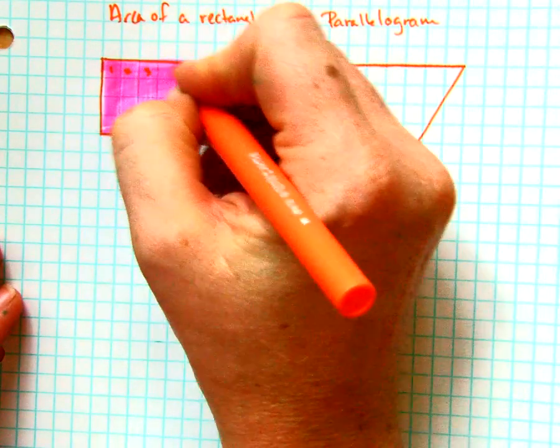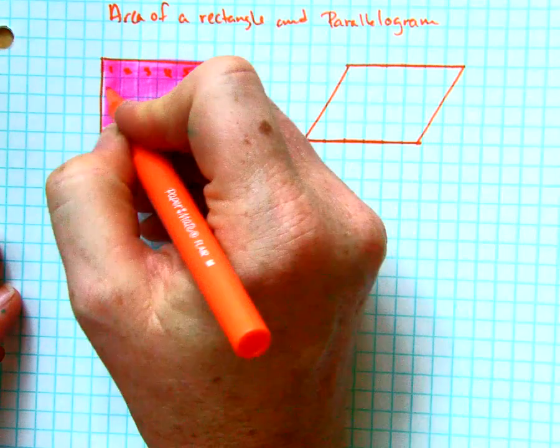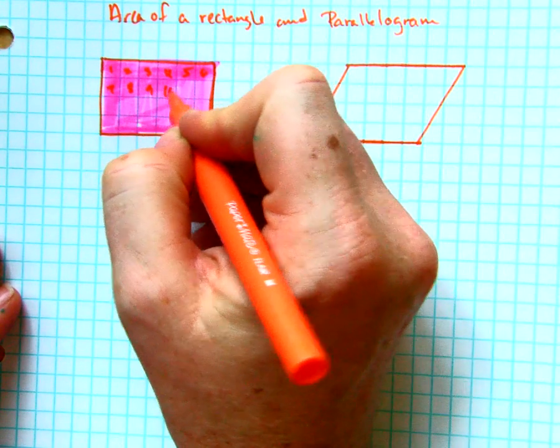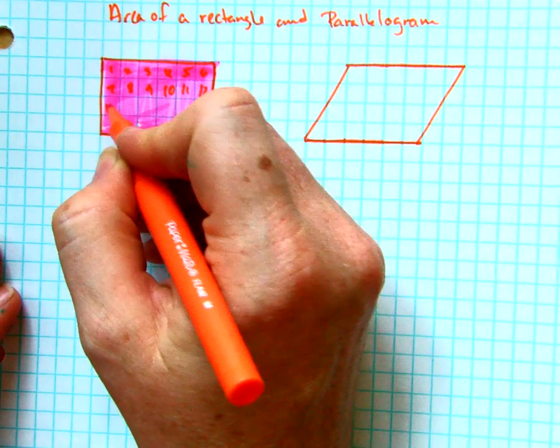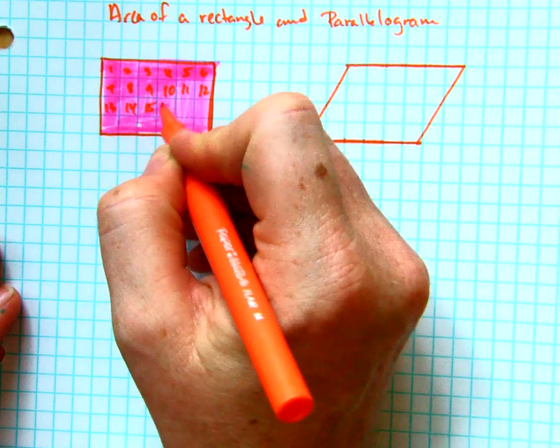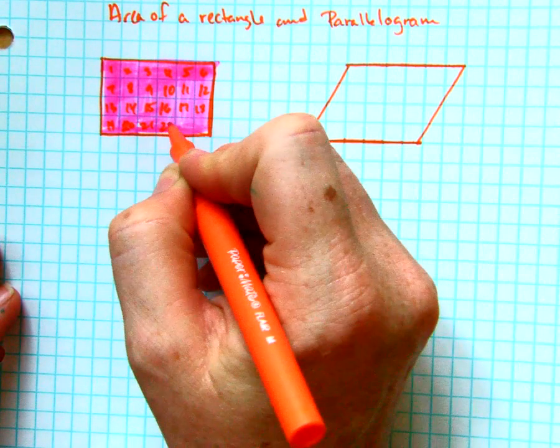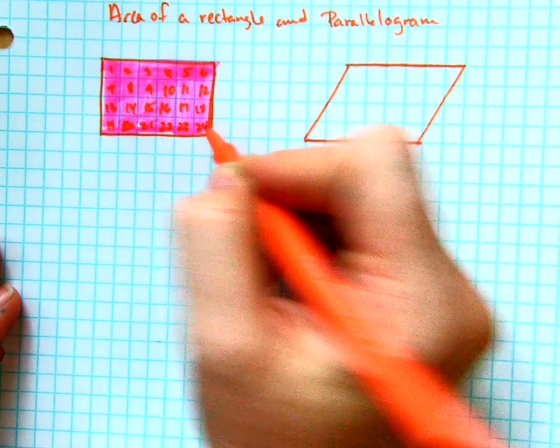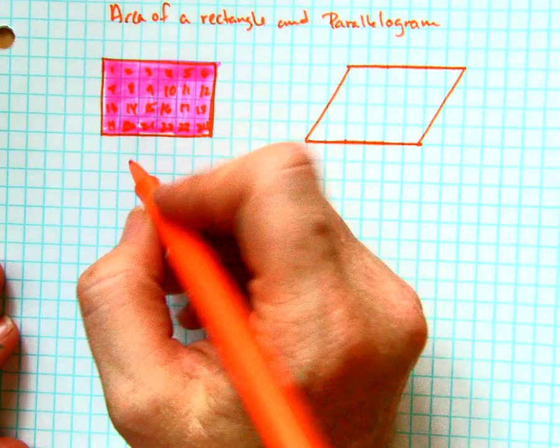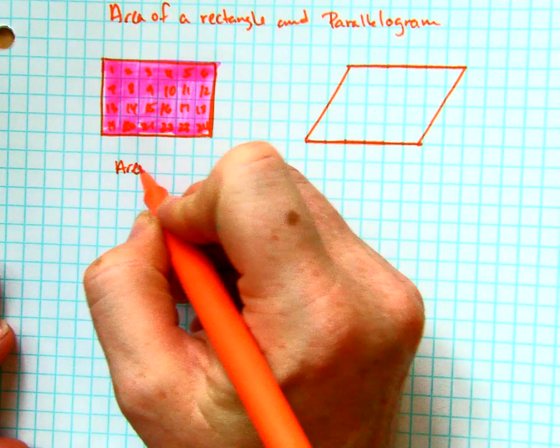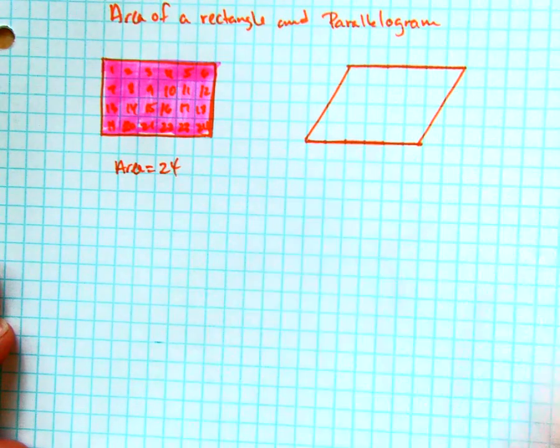One, two, three, four, five, six, seven, eight, nine, ten, eleven, twelve, thirteen, fourteen, fifteen, sixteen, seventeen, eighteen, nineteen, twenty, twenty-one, twenty-two, twenty-three, twenty-four. So we would say that area of this rectangle is 24.